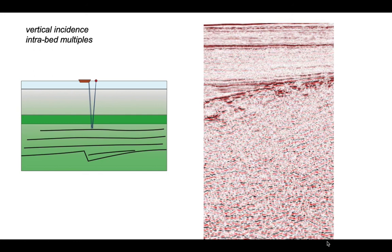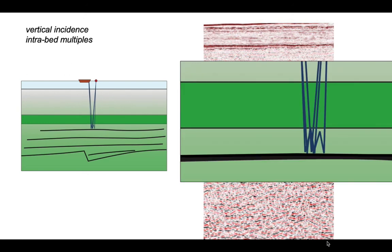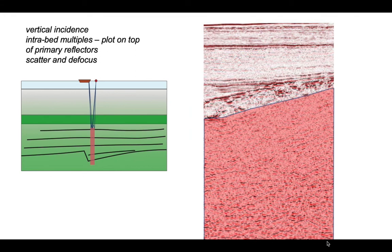These aren't like multiples that come off the seabed. These are intrabed multiples where the seismic energy is reverberating within the rock column. It can reverberate multiple times, generating really complicated ray paths where the seismic energy bounces backwards and forwards before coming back to the surface. The issue is that these reverberations — these multiples — will pile on top of primary reflectors below, making it very hard to discriminate between primary reflectors and multiples. This reverberation process also scatters and defocuses the seismic energy, giving a zone where seismic imaging is very poor.